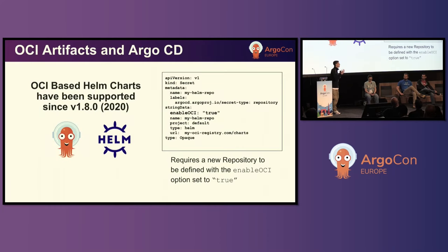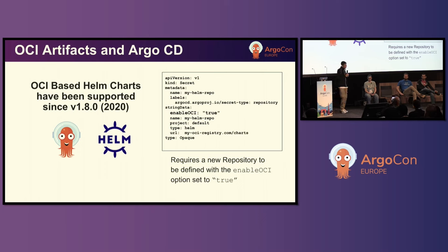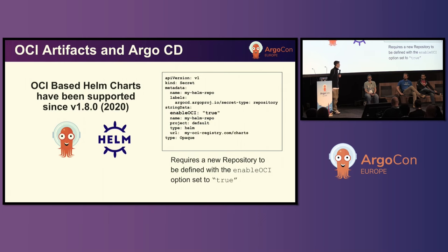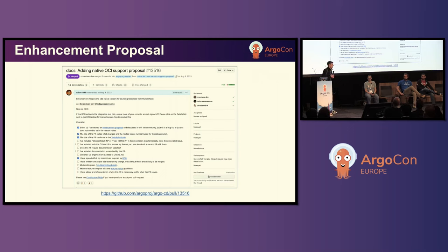OCI Helm charts have been supported in Argo since version 1.8, back in 2020. This is a way we can already enable OCI in the ArgoCD ecosystem. It's really easy to get started: create a secret with the property 'enable OCI' set to true, and you can start leveraging Helm charts stored in your OCI registry.